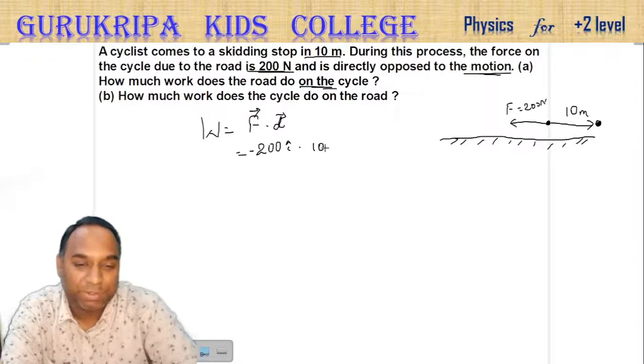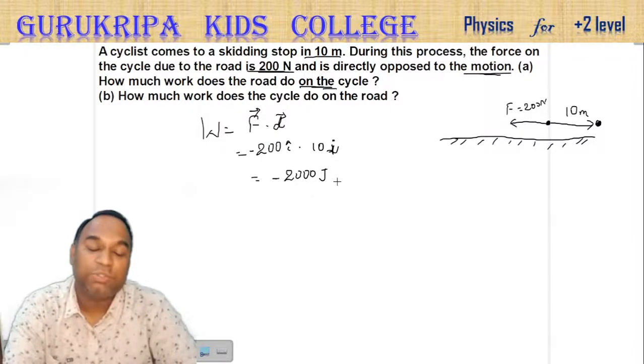Dot displacement is positive 10, i cap, not j cap, i cap. That is equal to minus 2000. Work done by the road is minus 2000 joules.